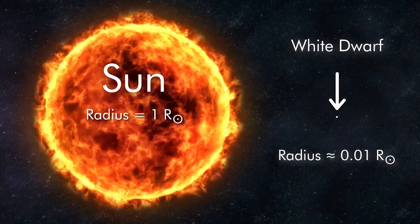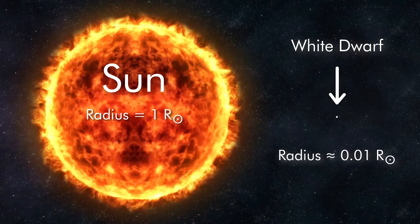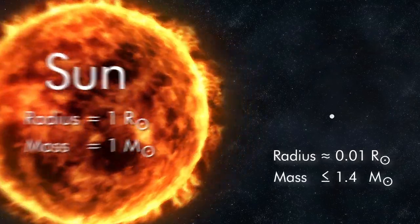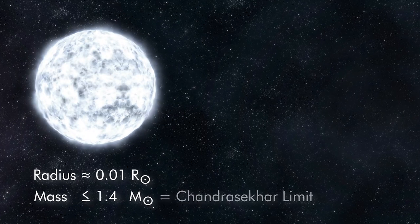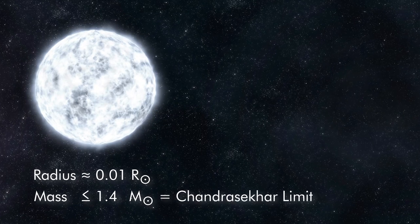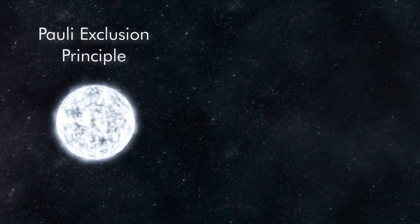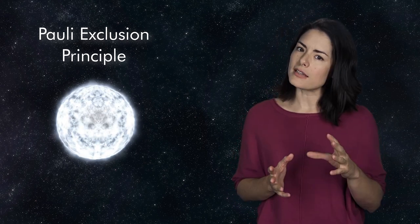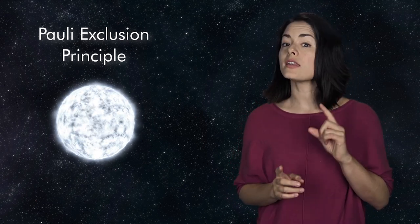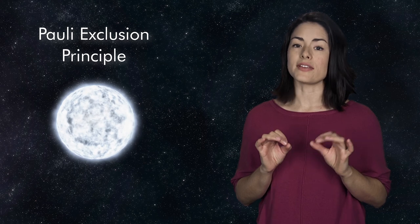Although white dwarfs are small compared to burning stars, they're still quite massive. Their mass can be as high as 1.4 solar masses, a value called the Chandrasekhar limit. Because of their large mass, gravity very tightly compresses the stellar matter. But at some point, you run up against the Pauli exclusion principle. This idea from quantum mechanics says basically that two identical particles cannot occupy the same place at the same time.